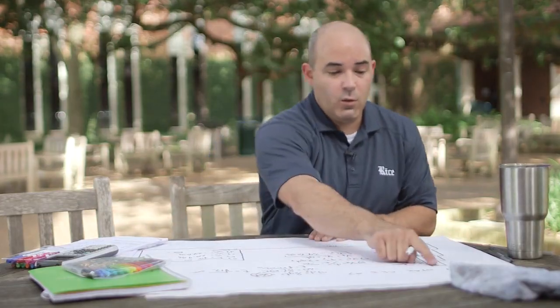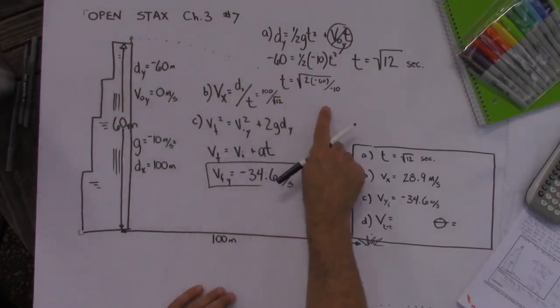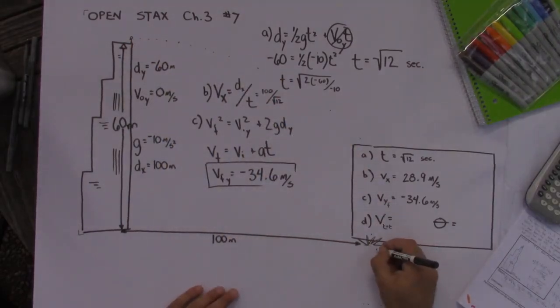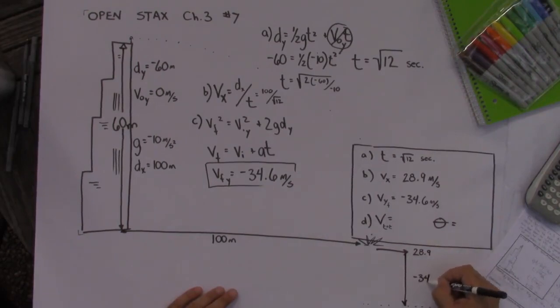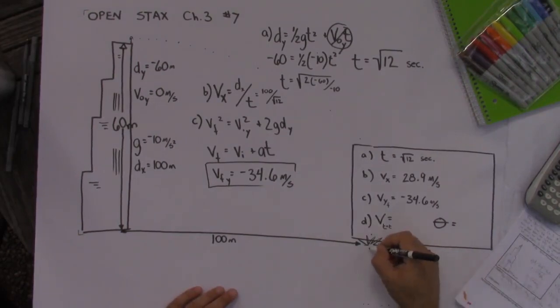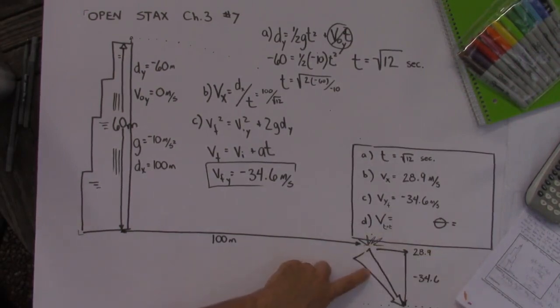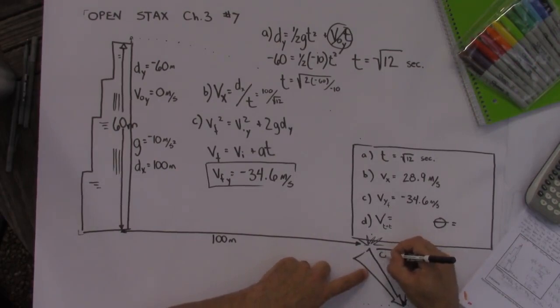Now this last thing is just a little practice with vectors. We know that when that projectile is launched off the top of that building and it hits over here it's got some velocity in the x. We just found that that was 28.9. We also know that it's got some velocity in the y direction. That was negative 34.6. And our answer for part d is two parts.